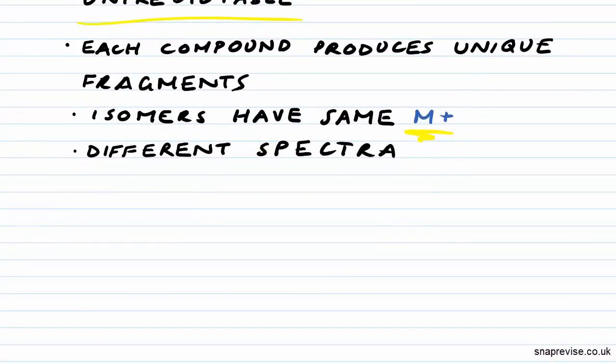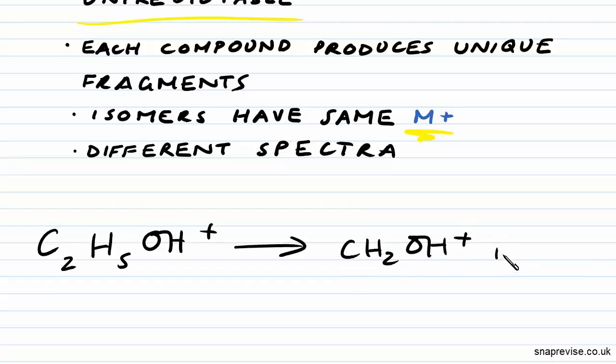If we were to look at the fragmentation pattern of ethanol, well the molecular ion produced by ethanol is C2H5OH+ because it's the molecular ion. Now one of the fragments it could break down into would be CH2OH+, and then we have a neutral species which would be CH3.